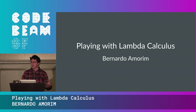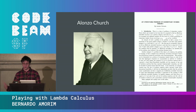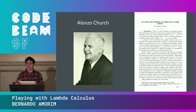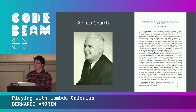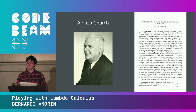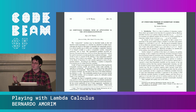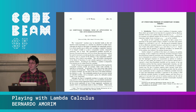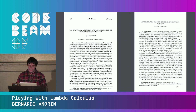I'll start with some background and history. Lambda calculus was invented in 1936 by Alonzo Church. He was trying to define what computability means — to formalize what kinds of functions were computable or not. Interestingly, this was published just one month earlier than Alan Turing's paper, which was trying to do the same thing. Alan Turing took a completely different route and defined Turing machines.